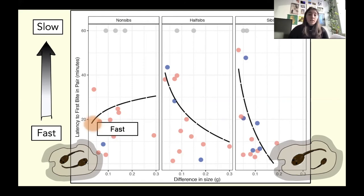So let's look a little bit at these data. We see that in the first panel, which are non-siblings, when the pairs are similarly sized, there's a quite fast initial aggressive reaction. This seems to pitter out a little bit as we see increased size differences between pairs.